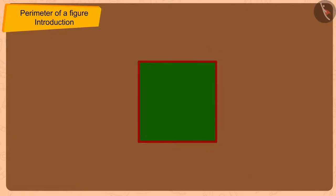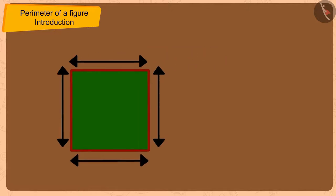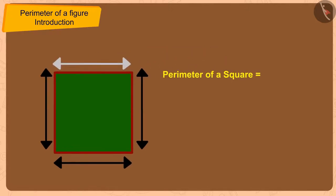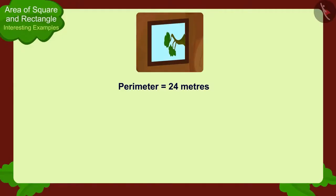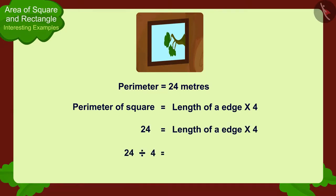As we saw in the previous video, since all the edges of a square are exactly the same, we can find the perimeter of a square by multiplying the length of any edge by four. Therefore, the perimeter of a square shaped window will be four times the length of any of its edges. In this way, we can find the length of any of the edges of the window as six meters.